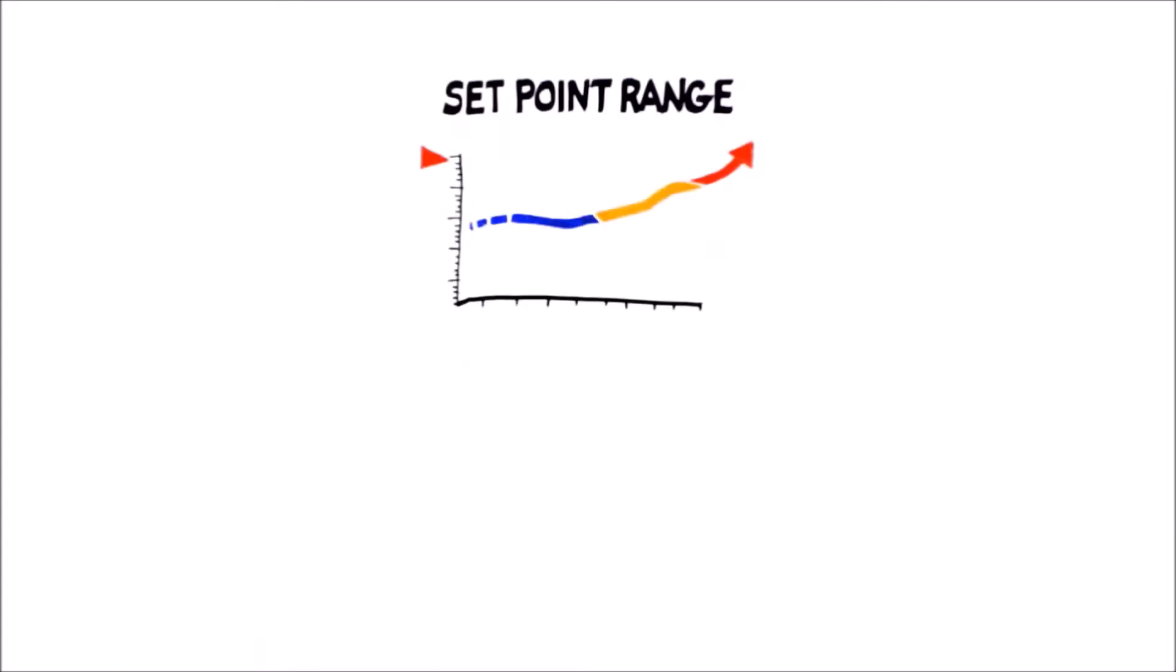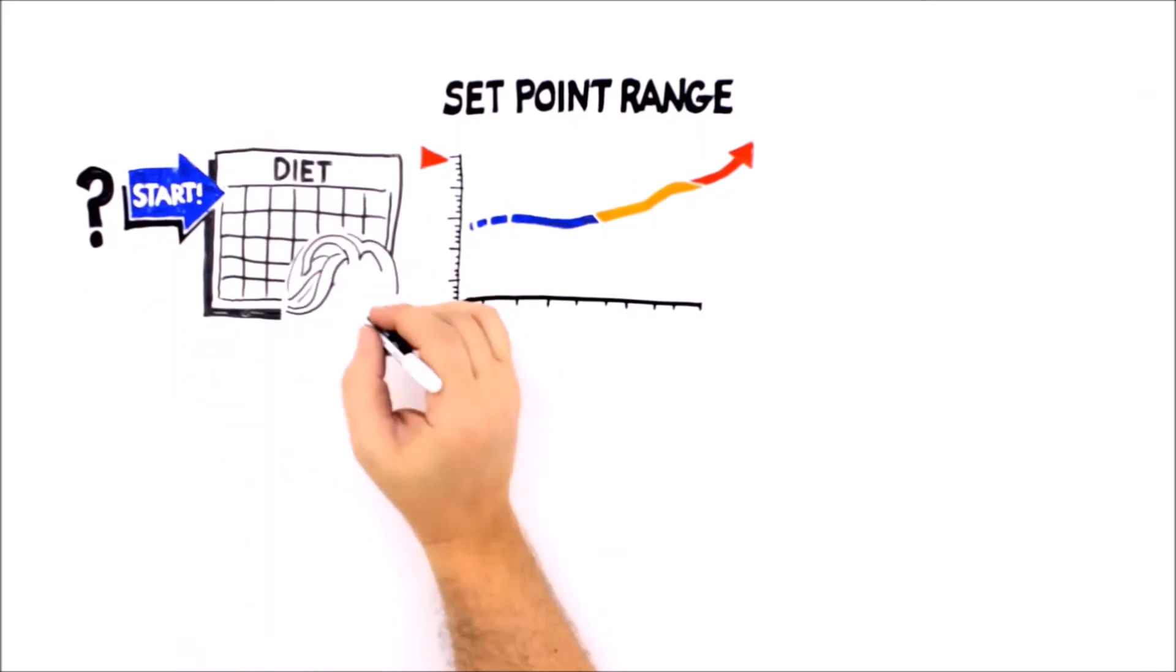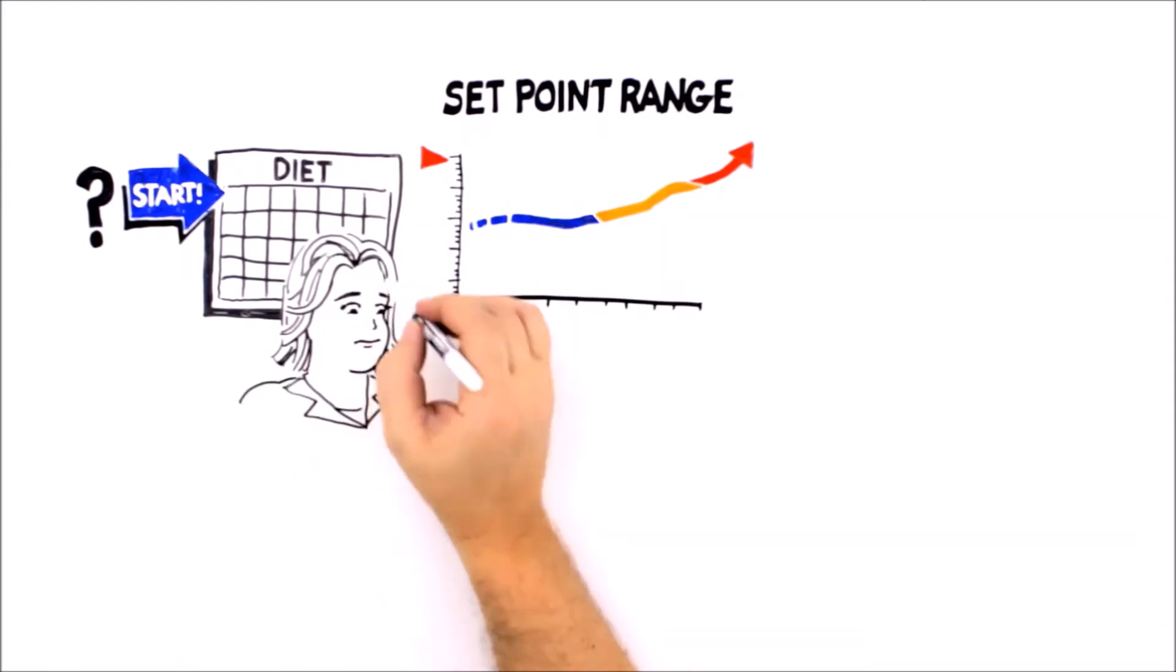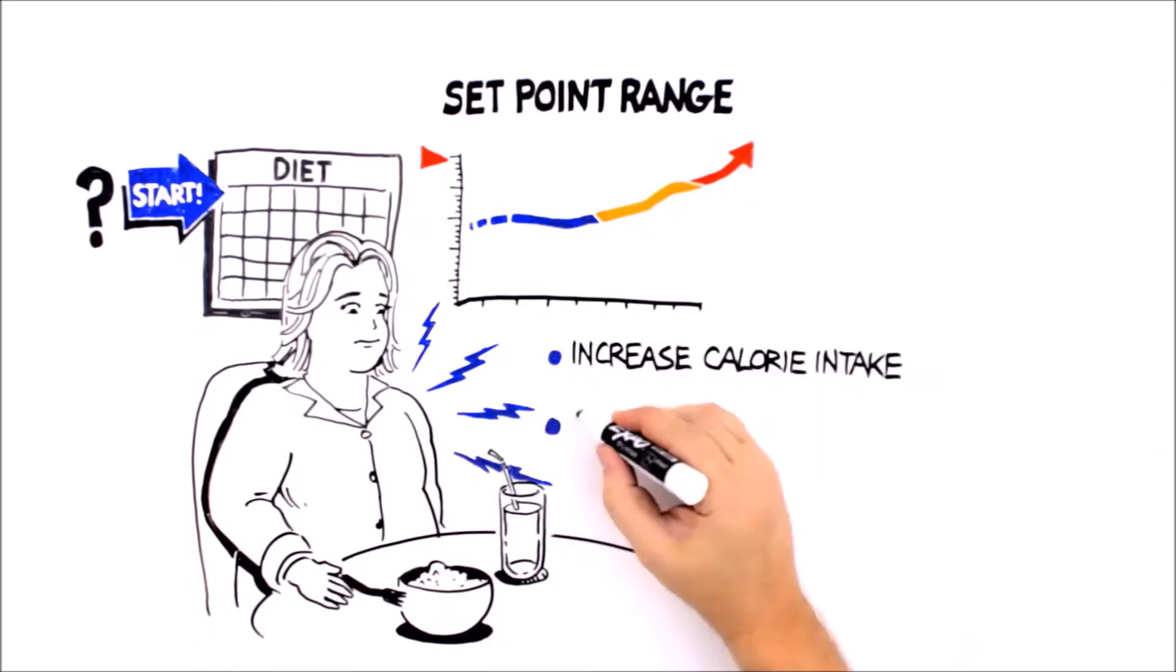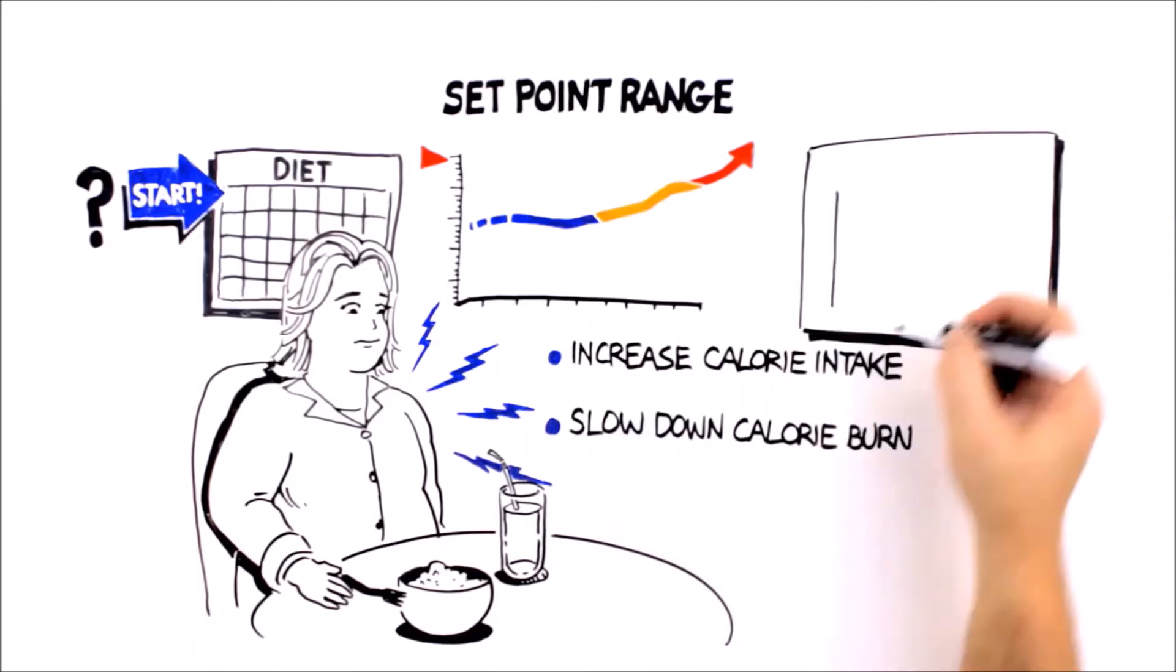Once your set point has been elevated, your body works to defend it vigorously. What happens when Amanda starts a diet? She might be able to lose some weight temporarily, but hormone signals from her body change in response to weight loss, and tell her brain to increase calorie intake and slow down calorie burn to restore the body fat she's lost.